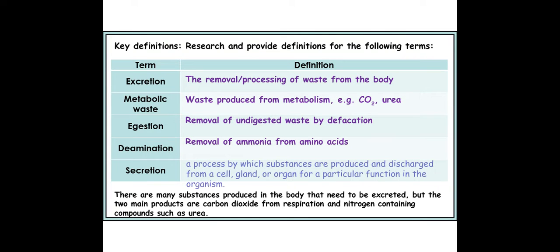Secretion is the removal of substances from a cell, normally from a gland or an organ. It's really important that you use excretion and secretion in the correct terminology. For example, if you say that an enzyme is excreted from a cell you won't get the mark, but if you say that the enzyme is secreted from the cell you would get the mark. So make sure you are using the correct terminology.